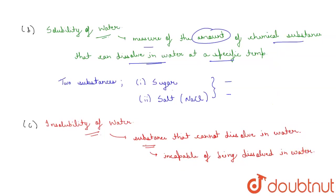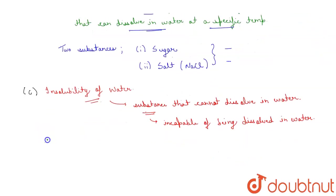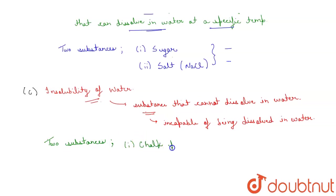Now the two substances that are insoluble in water are: first one is chalk powder, and second one is sand.